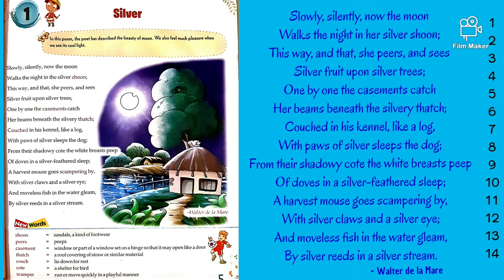Now the last two lines of the poem: and moveless fish in the water gleam by silver reeds in a silver stream. The final couplet evokes a feeling of peace. The poet speaks about the fish, which are also sleeping — moveless in the gleaming water, resting by silver reeds. Silver reeds are the tall grassy plants which grow in water or marshy ground. The moonlight moves steadily within the silver stream, and it is easy to imagine the river moving through the night-time landscape till morning.